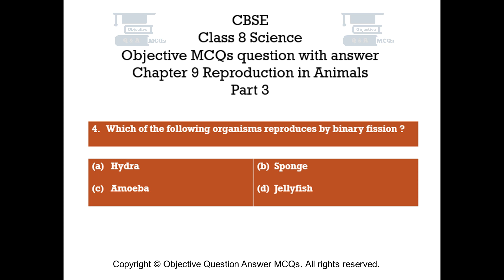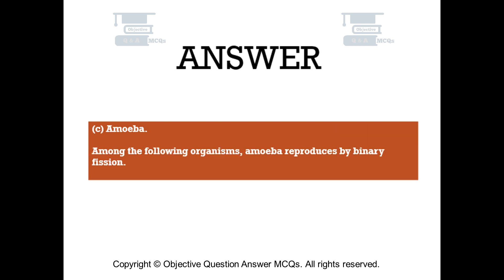Question number 4. Which of the following organisms reproduces by binary fission? Option A: Hydra. Option B: Sponge. Option C: Amoeba. Option D: Jellyfish. The right answer is option C — Amoeba. Among the following organisms, Amoeba reproduces by binary fission.